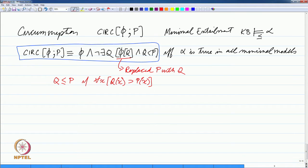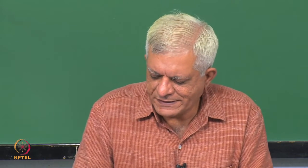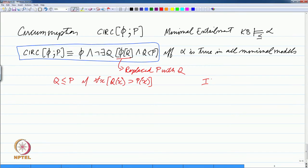We can define q is less than or equal to p if for all x, q(x) implies p(x). We are not talking explicitly about extension, but we are talking in terms of different predicates. So q is a predicate which says that whenever q is true, p is true. Alternatively, the interpretation of q is a subset of the interpretation of p.